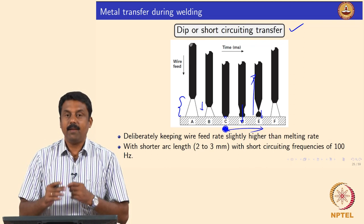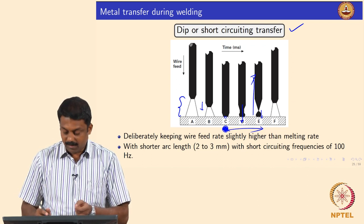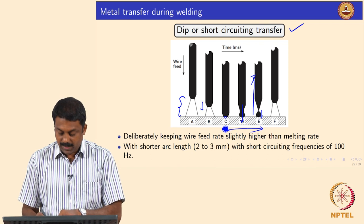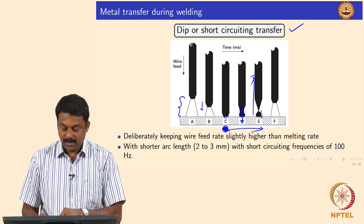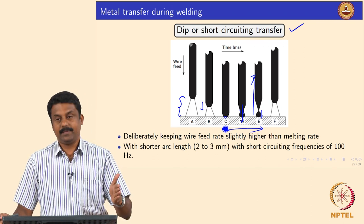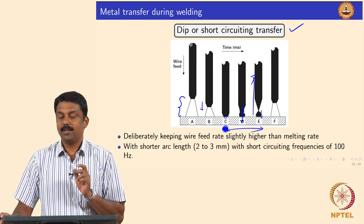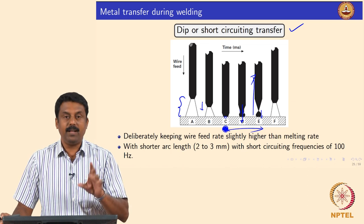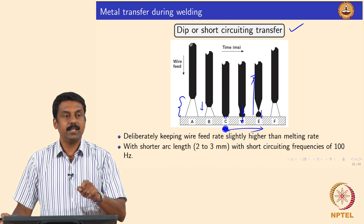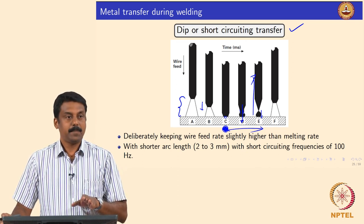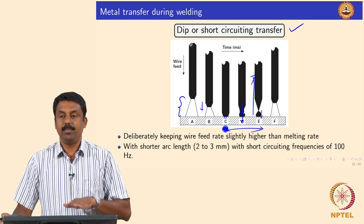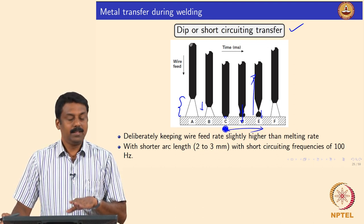By carefully manipulating the current-voltage waveform, we can transfer the droplet without any explosion. This is critical because if you keep passing the same amount of current when a neck forms, you increase the Lorentz force greatly and will have an explosion. Your power source should be capable of turning the current off the moment short circuiting happens. By deliberately keeping the wire feed rate slightly higher than the melting rate, we can establish short circuiting. I will show you a video — it will be very clear.